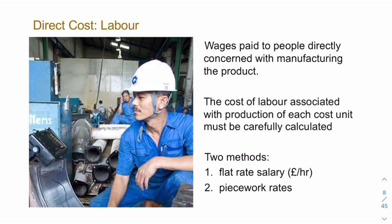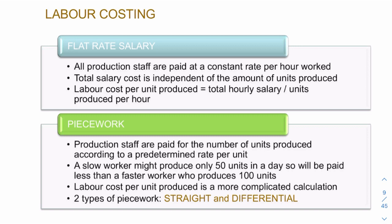Why is it important to distinguish between the two? In order to determine the profit of an item, we need to find the cost, and the cost will be different depending on how we calculate it. In a flat rate model, everyone is paid a flat rate per hour, independent of how many units are produced — what matters is when they clocked in and out. It's all a function of time.